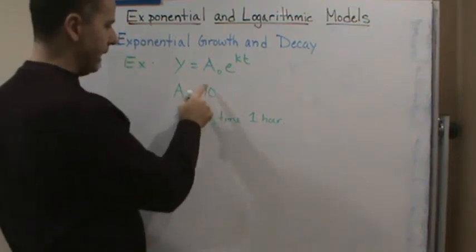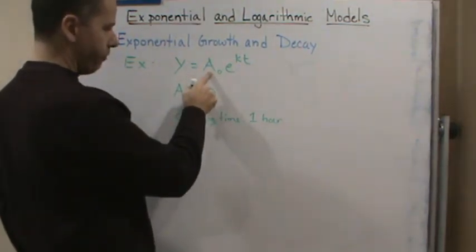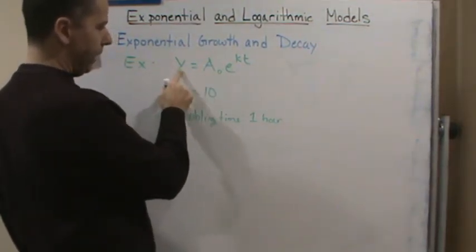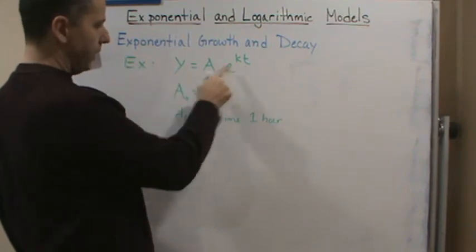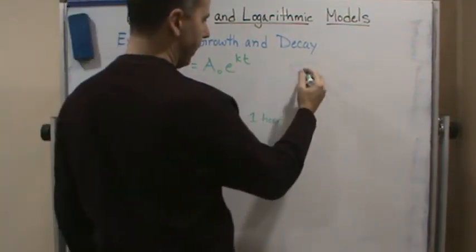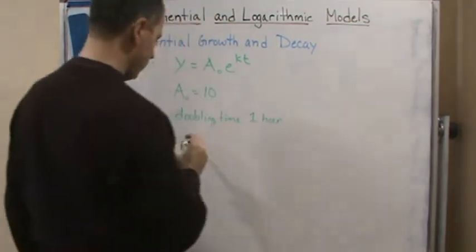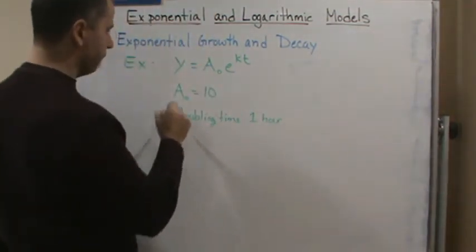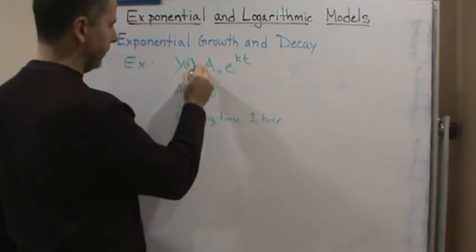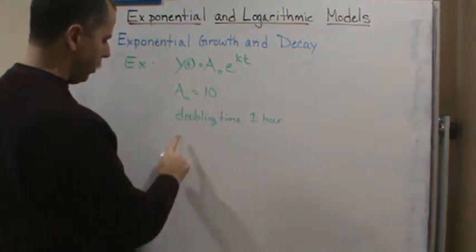So I know this is 10, and I know when t is one I'm going to have 20. So I'm going to write this as a function of t.